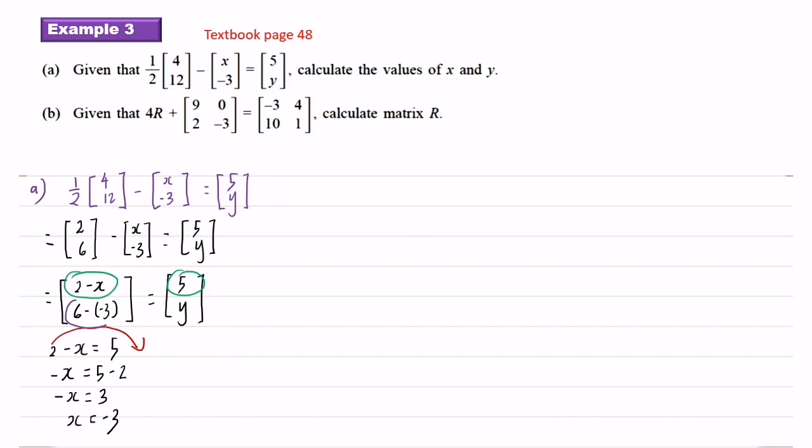The next one: 6 minus negative 3 equals y. So I write the element outside the bracket. Negative negative is positive, so 6 plus 3 equals 9, so y equals 9.